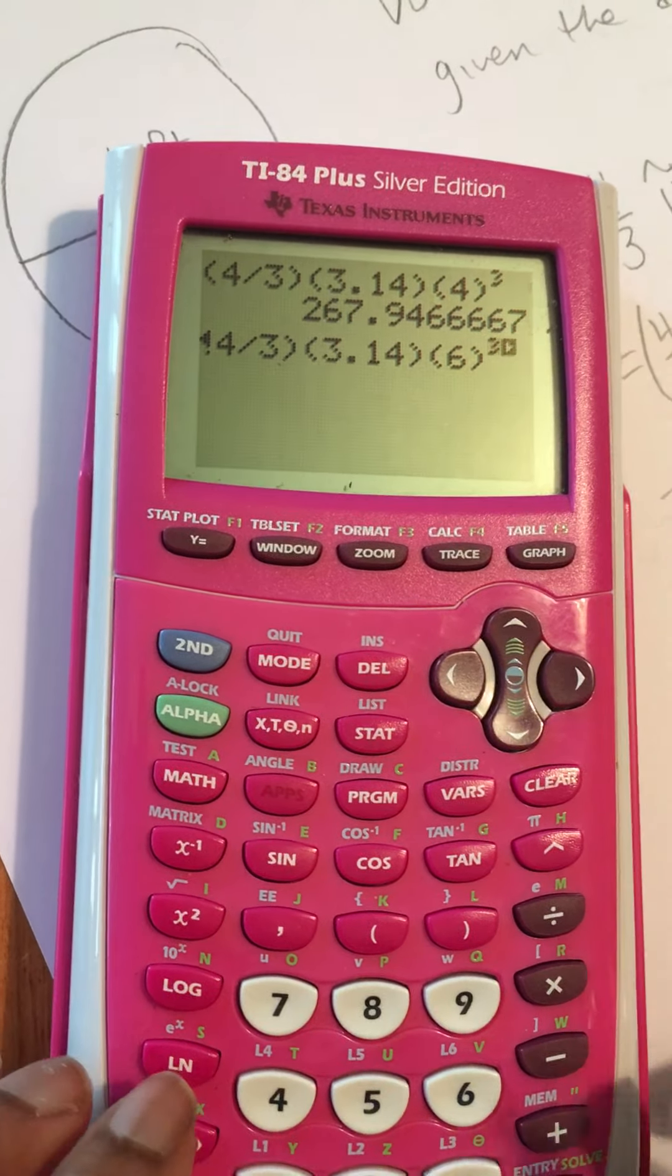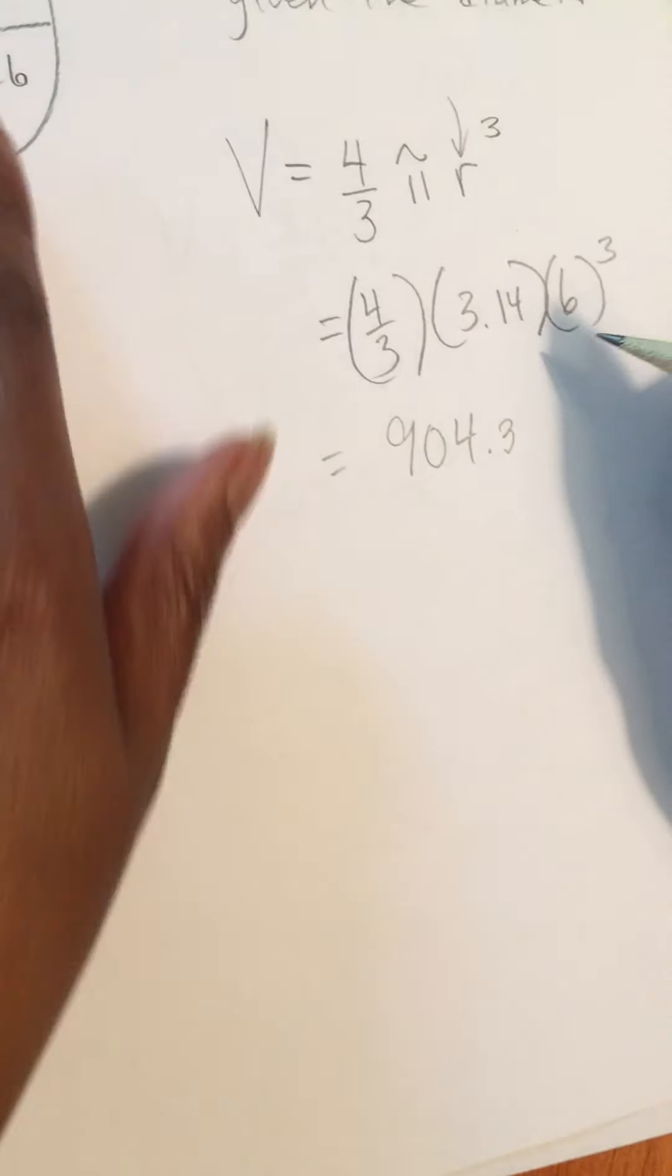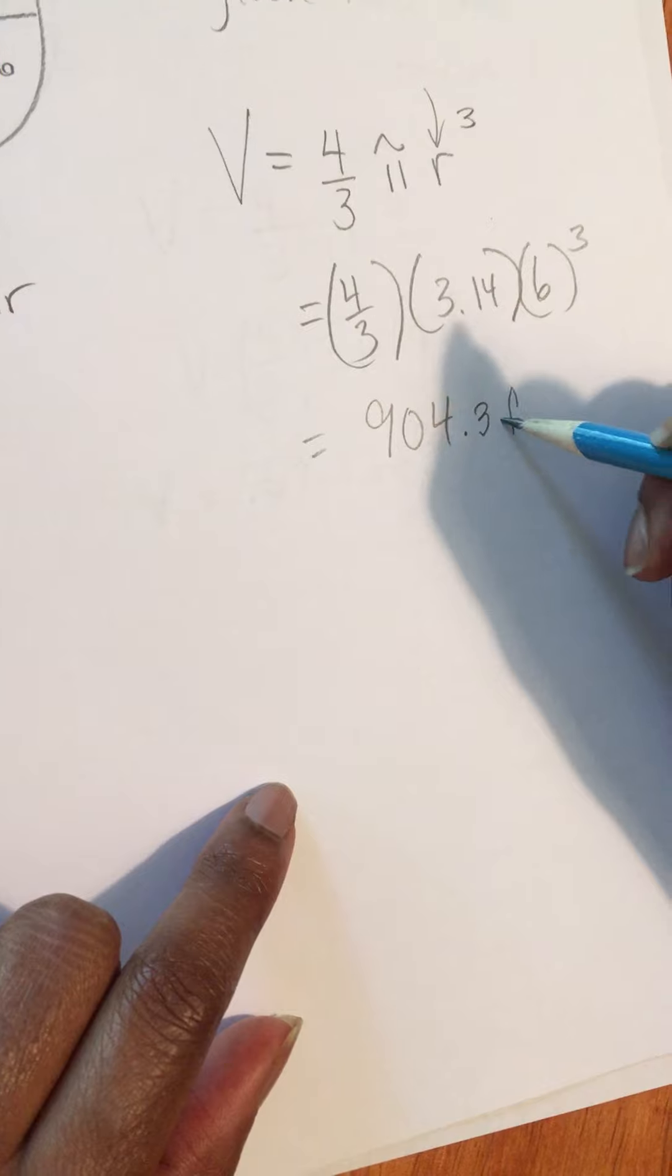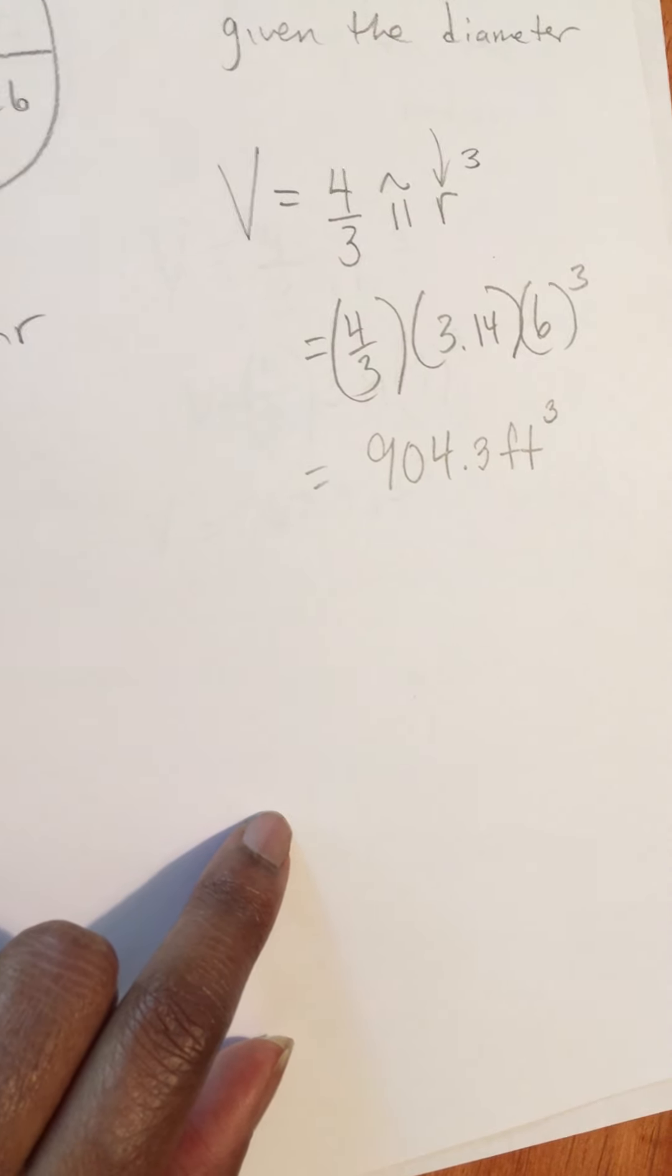Hit enter, and the volume for this last one is 904.3. Again, my units was feet, so 904.3 feet cubed, meaning the little 3 on the top. So that's again how you find the volume of a sphere given the radius or the diameter. See you later.